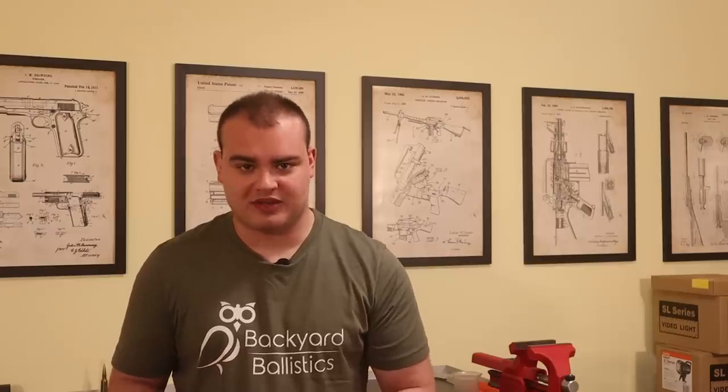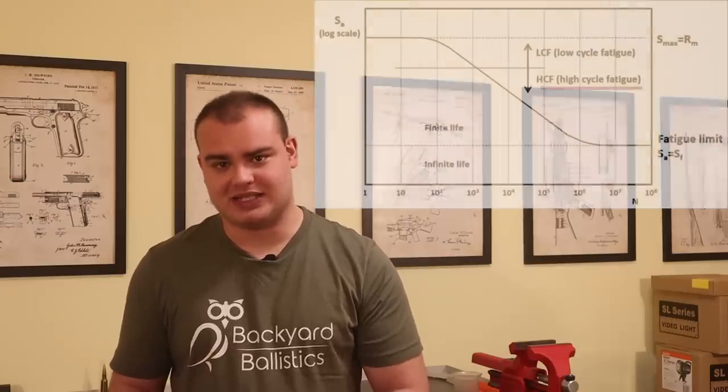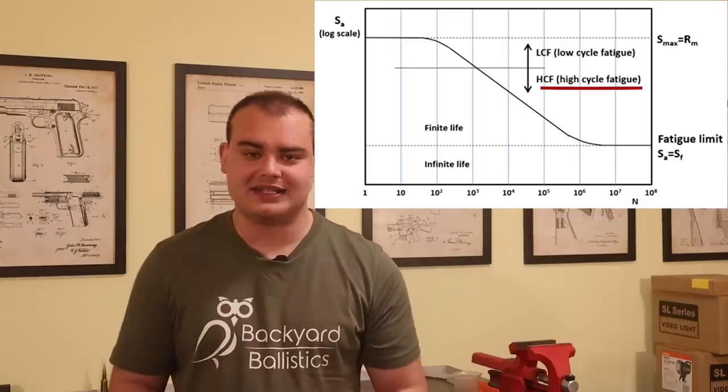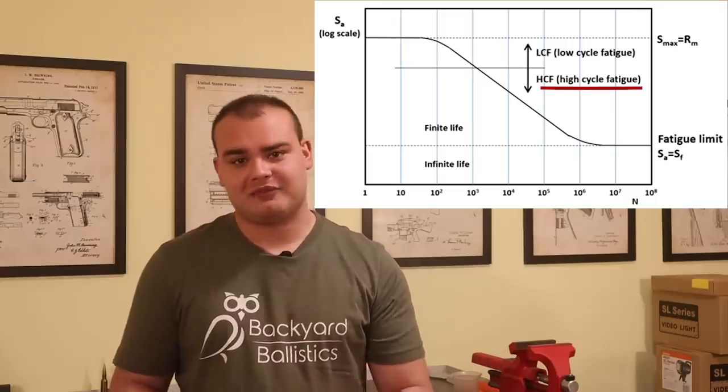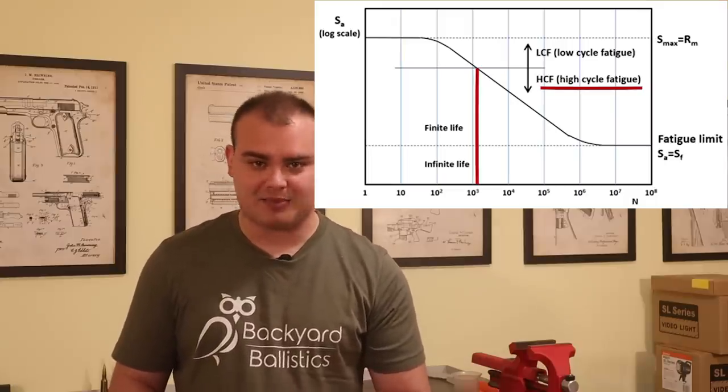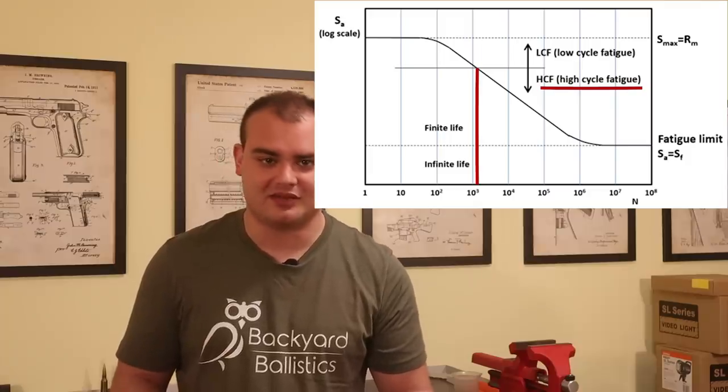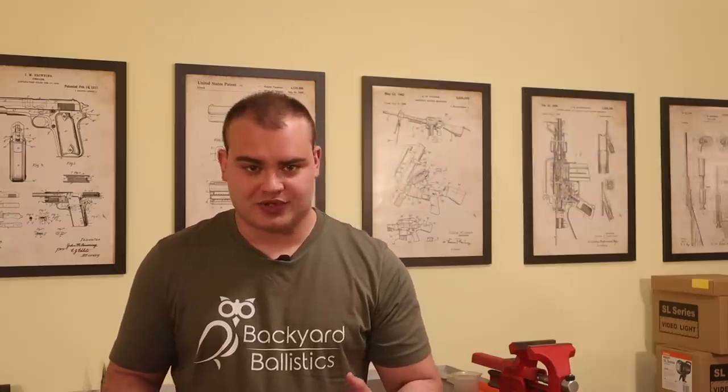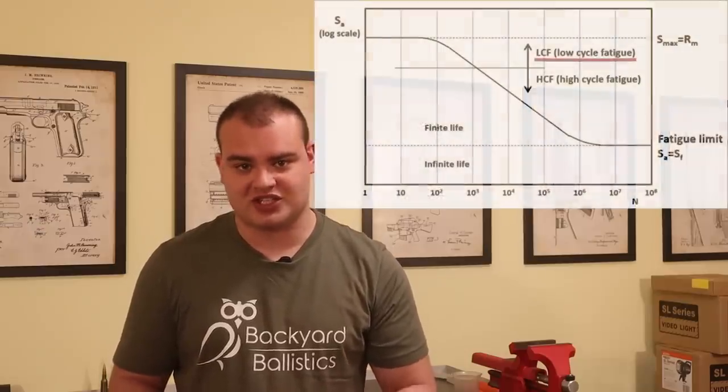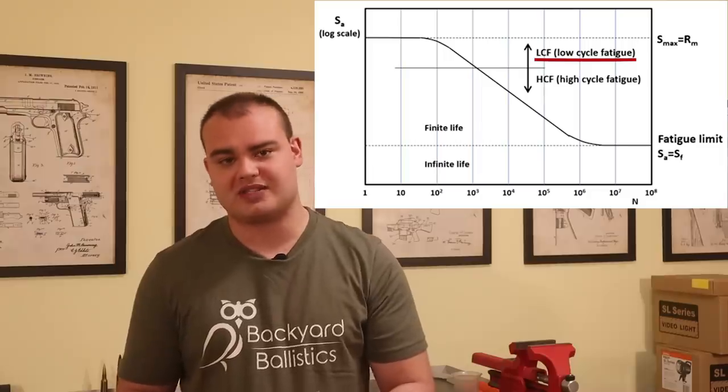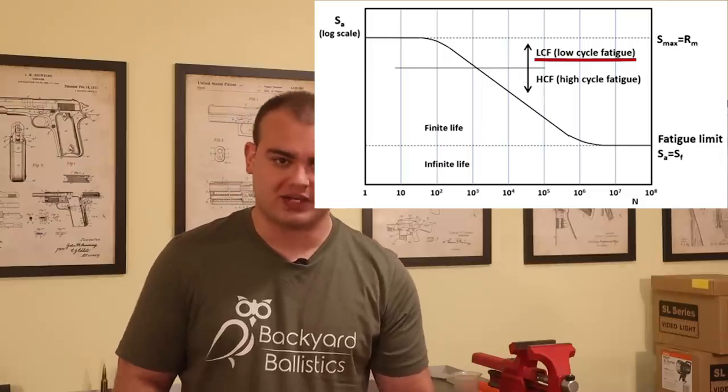First of all, when we talk about fatigue, we normally mean high cycle fatigue, which is the one that happens entirely in the elastic range of the material, and that phenomenon requires at the very least a couple thousand cycles to break the part, hence the name high cycle. In order to get a shorter fatigue life, like would have been the case for our rifle, we would need to reach plastic irreversible deformation at each cycle or shot, so that our piece could break from what is called low cycle fatigue.